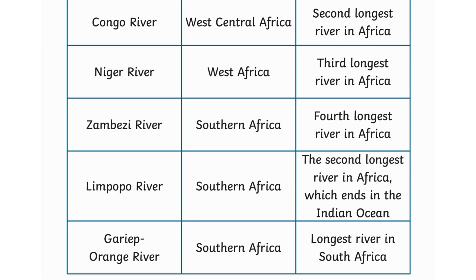The Zambezi River in southern Africa is the fourth longest river in Africa. The Limpopo River in Africa ends in the Indian Ocean. The Gariep (Orange River) in southern Africa is the second longest river in South Africa.